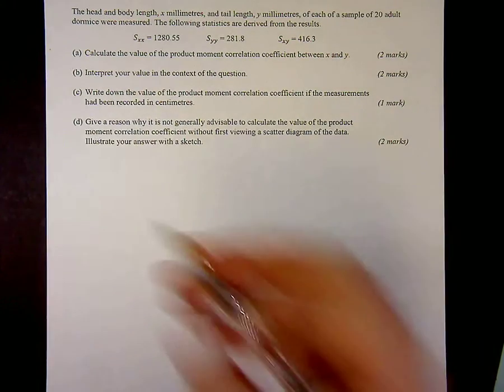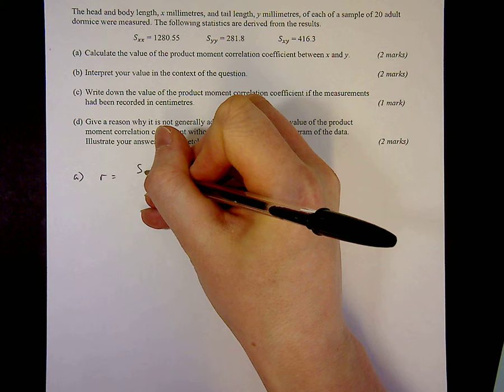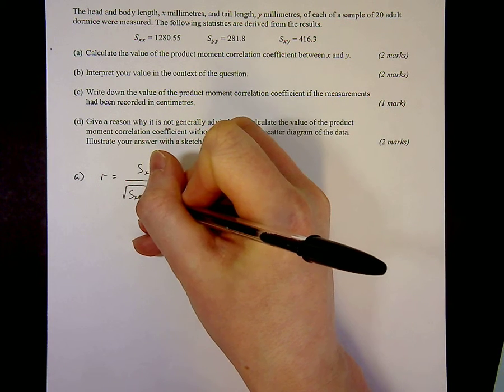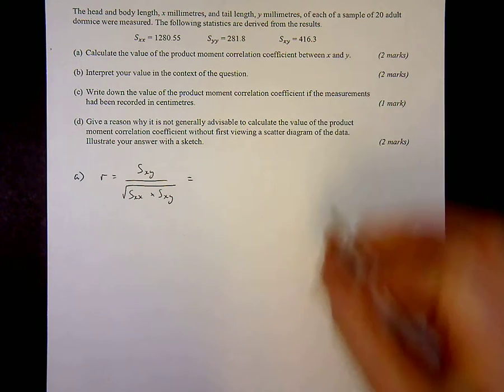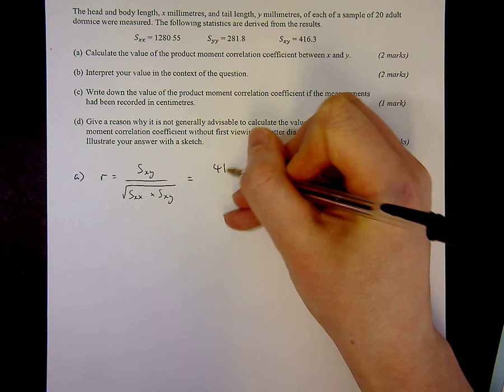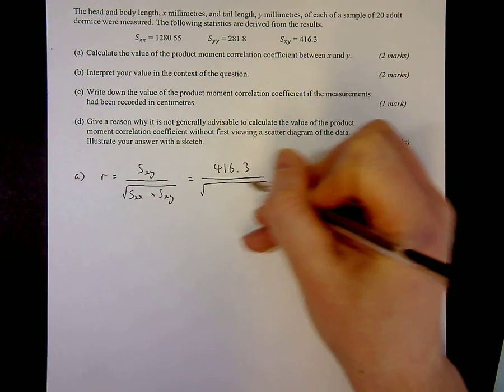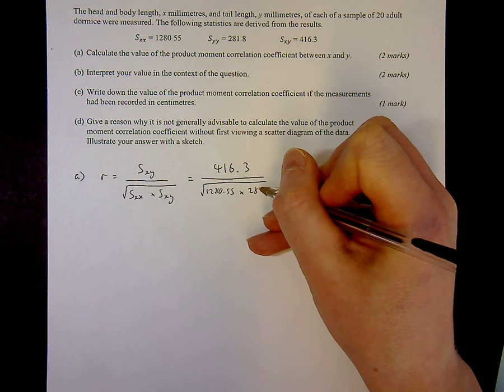So for part A we are going to use the formula R equals S_xy over square root of S_xx times S_yy as given in the formula book. So just substitute those in and I'm going to get 416.3 all over the square root of 1280.55 times 281.8.